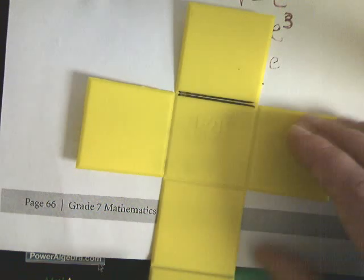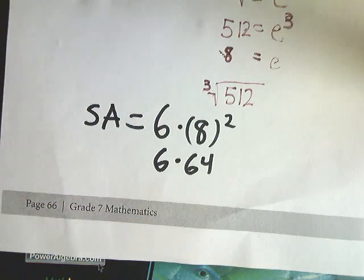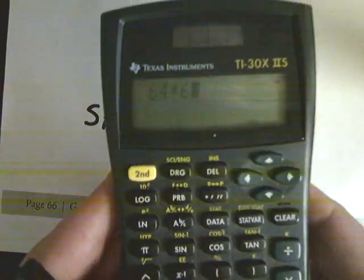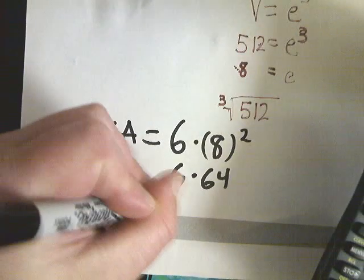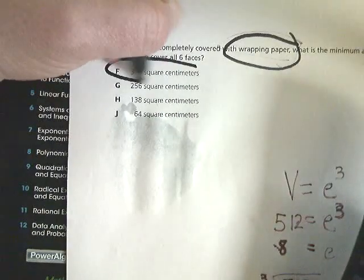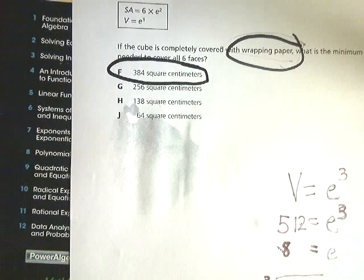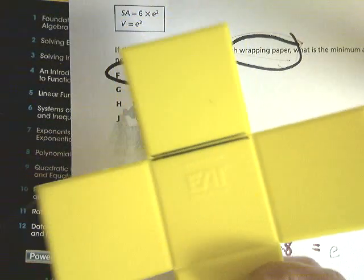That would be the amount I would need to cover one of these, but there's 1, 2, 3, 4, 5, 6 of them. So I'm going to do 64 times 6, 384. So I'm going to look up here, 384 square centimeters. And it should be square centimeters because we have just a bunch of squares.